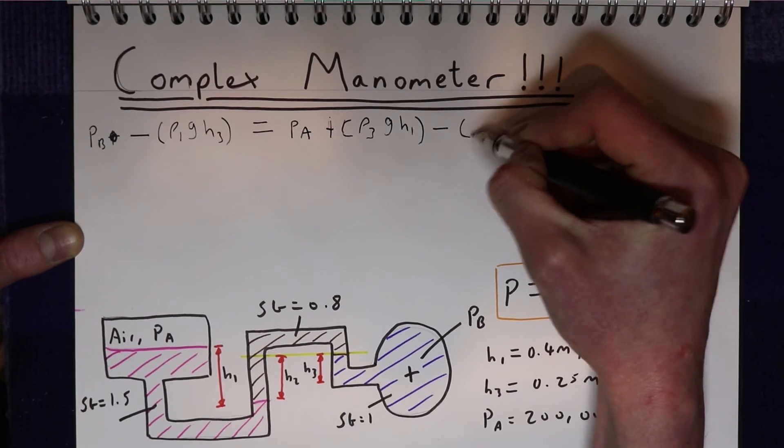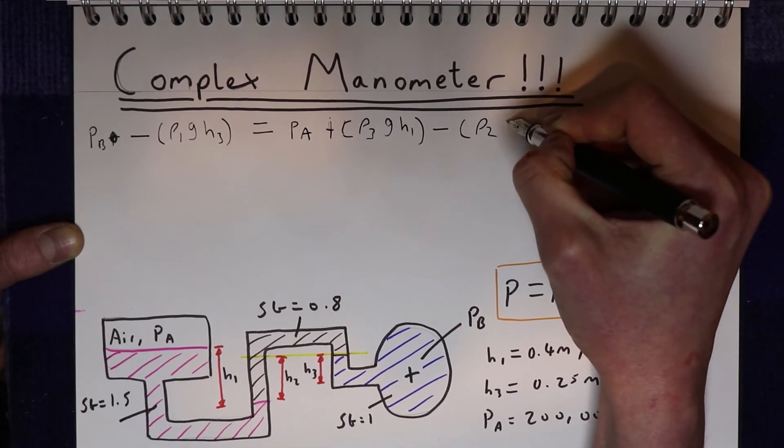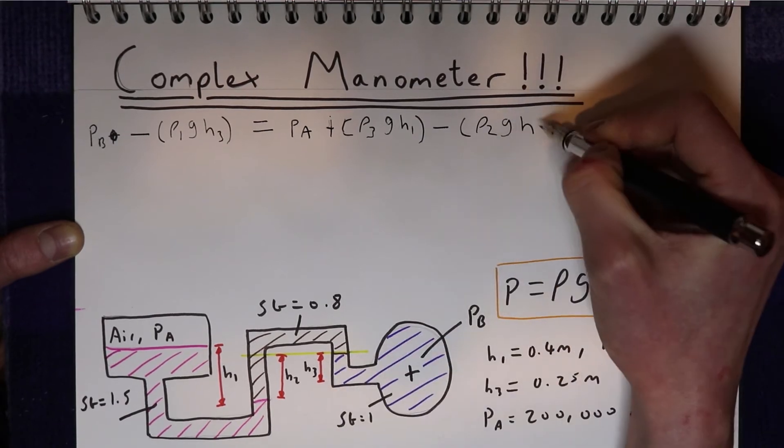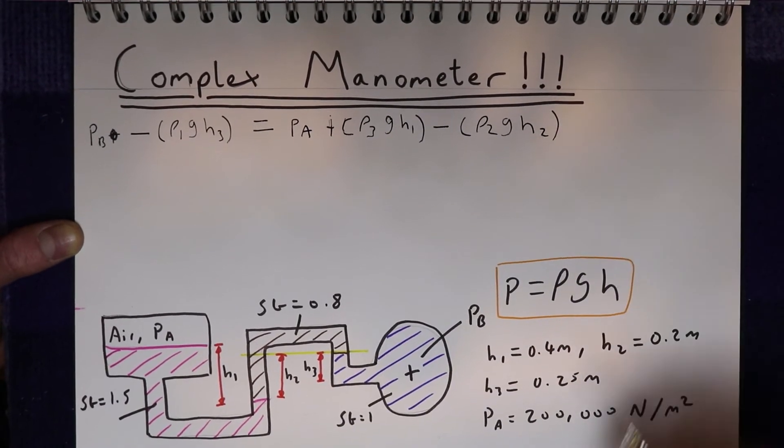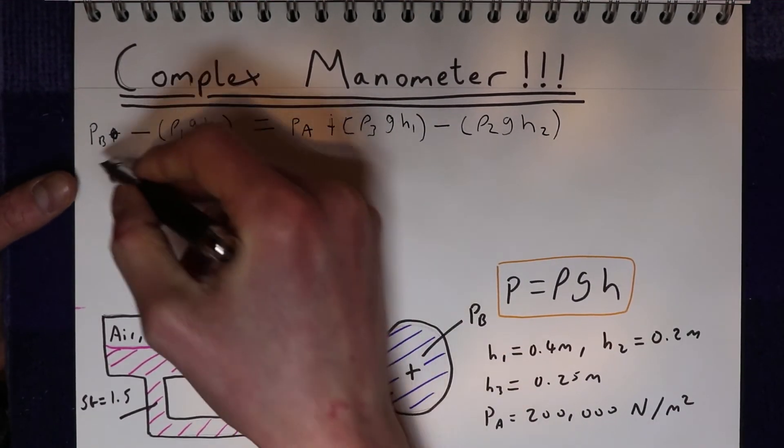And then again we're going up through this fluid, so we're losing pressure here, so we'll minus that from the fluid we'll call density 2, times gravity times h2. Okay, and what we want to do is rearrange this equation for PB.